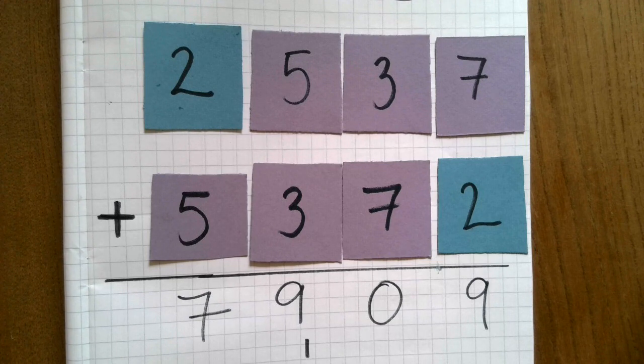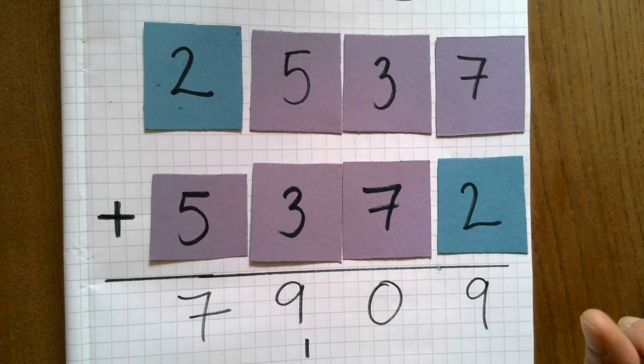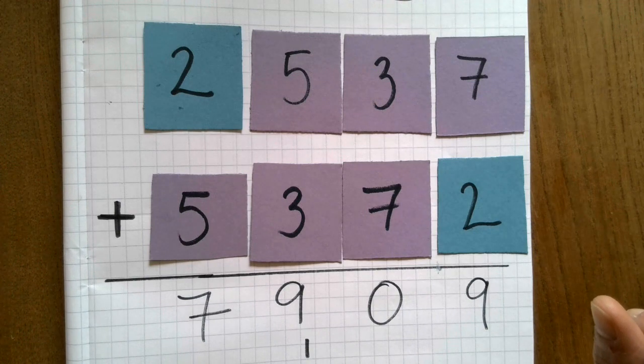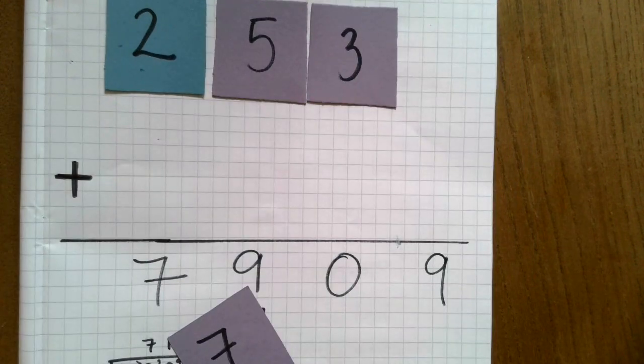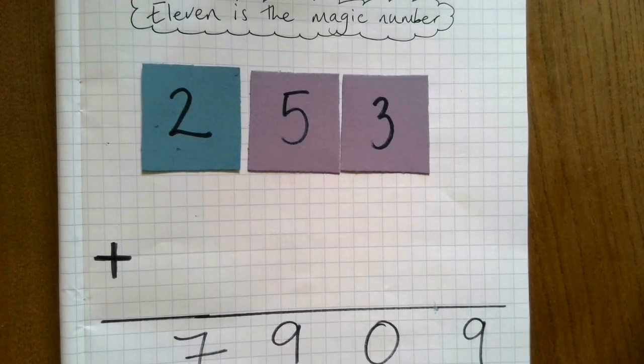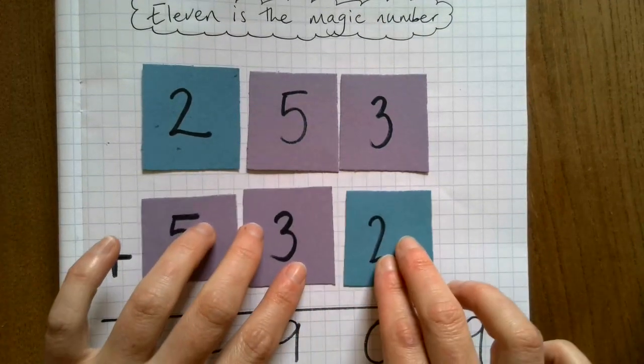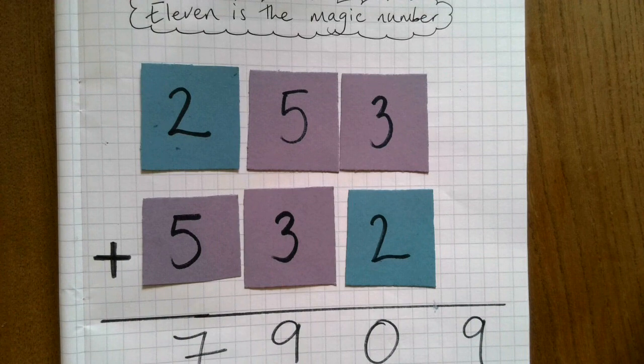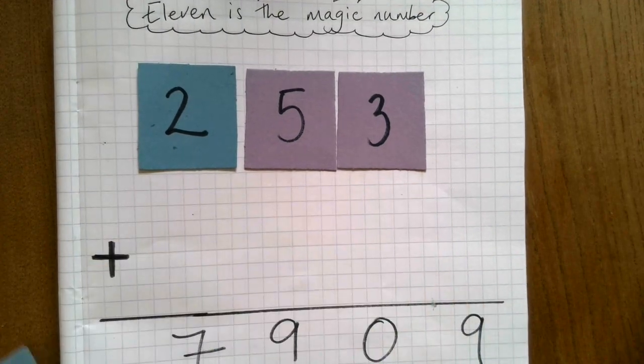If you want to try and spot some patterns, maybe you'd like to try it with a three-digit number to start with. Maybe you'd start it with 253, for instance. And then if you started with 253, you would then add 532.